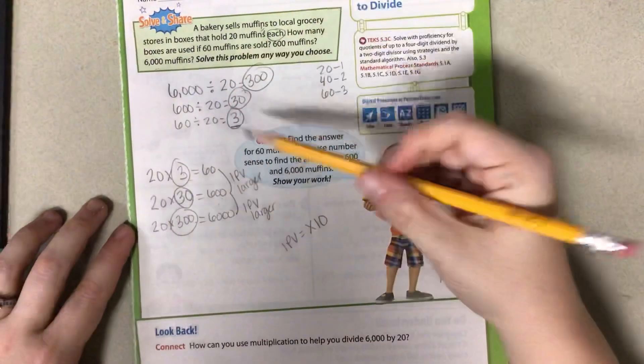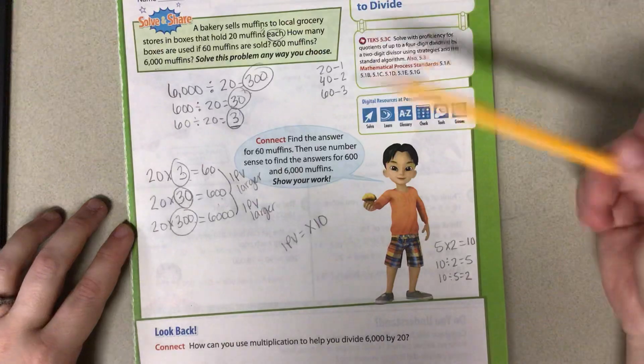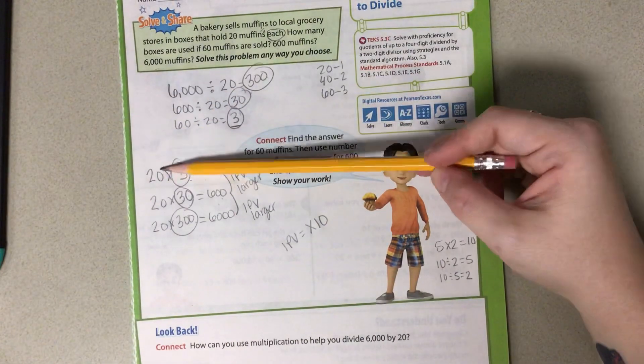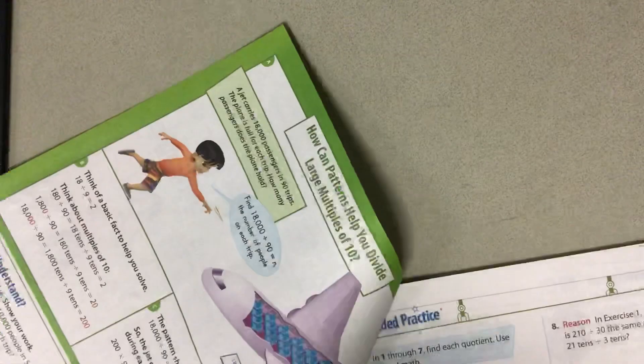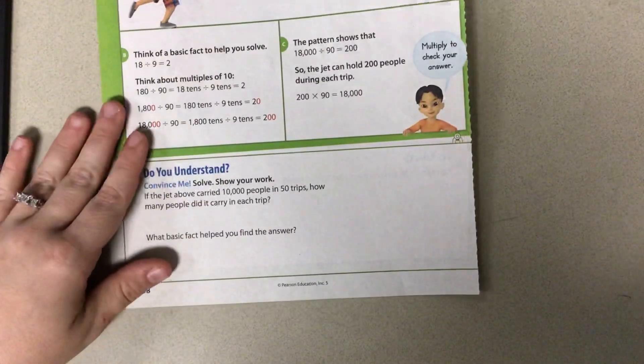So we have 3 boxes, 30 boxes, and 300 boxes. Starting down at our basic helped us work our way up into our larger number. Let's try that again on the next page, on page 198. We're going to look down here at the bottom.